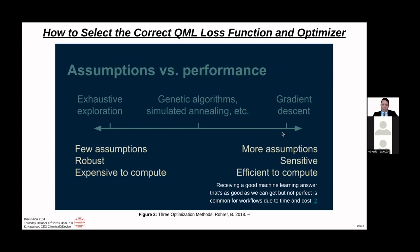The author of this resource, based in Boston, said — paraphrased — that receiving a good machine learning answer that's as good as we can get, but not perfect, is common for workflows due to time and cost. You might start to go left on the spectrum, spending more compute time if you want the absolute best performance, typically at the cost of time.